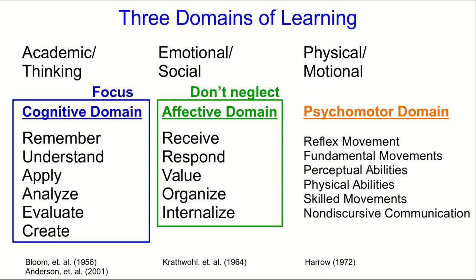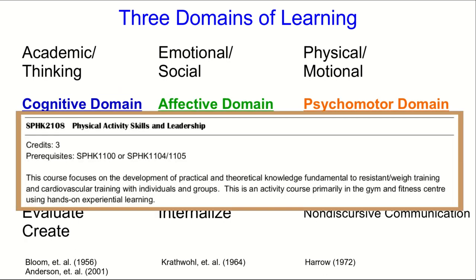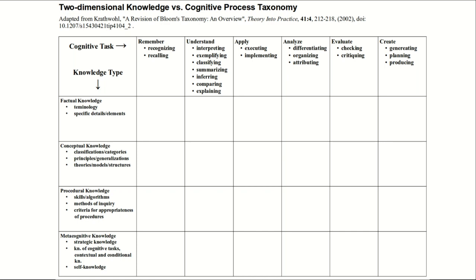For most of you, the psychomotor domain probably isn't as important, but for some of you — if you're teaching sports, outdoor activity related courses, dance, or acting — the psychomotor domain is probably crucial. Also, if you're feeling that the taxonomy is just way too simple, I'll point out that there's a recent revision that introduces a two-dimensional taxonomy.